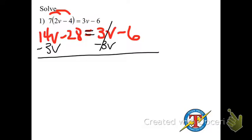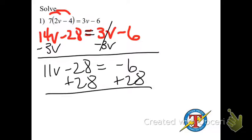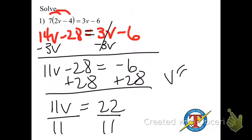All right. So now I have 14V minus 3V, which is 11V. Bring down my negative 28. Bring down my equals and bring down my negative 6. Get the 11V by itself. Add 28 to both sides. And I have 11V equals 22. Divide by 11. And V equals 2.